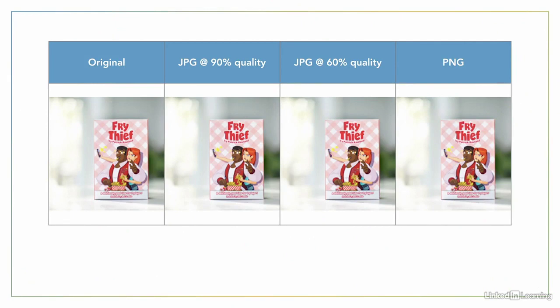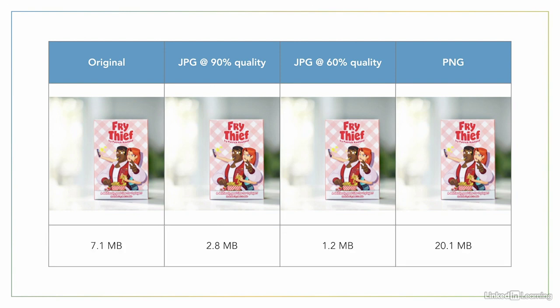Which of these images do you think is the largest file? I saved all the images in the same image editing program. The left is the original, the two in the middle are JPEGs at different qualities, and the last is a PNG file. Now to my naked eye, they're all very high quality and I can't tell the differences between them. In this case, the JPEG files are much smaller than the PNG file, and the different quality levels make a big difference. The point of this example is to demonstrate how drastically you can improve speed just by saving images as the right file type and the right file quality.